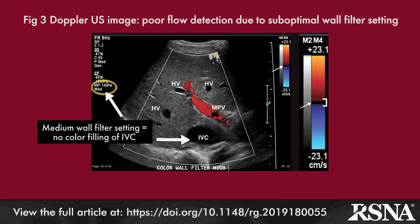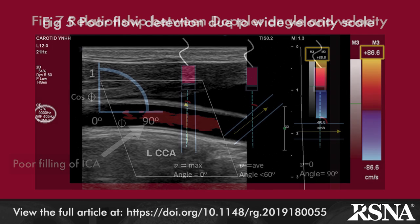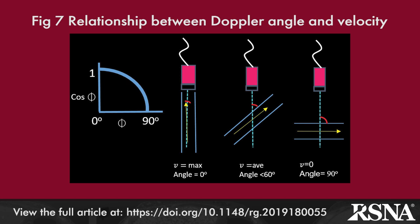Increasing the gain setting until color is visible outside the boundaries of the vessel, then decreasing gain until all the color specks outside the vessel wall disappear, ensures proper adjustment. Other issues include a high wall filter setting resulting in loss of diastolic flow. Low filter settings can ensure display of low amplitude velocities. Similarly, if the velocity scale is set too high, slow flow may not be detected on color or spectral Doppler. Artifactual absence of flow can be seen when the angle of inclination of the ultrasound beam to the vessel is at 90 degrees. Remember that the Doppler frequency shift equation includes the cosine of the angle between the beam and vessel, and that the cosine of 90 degrees is zero.